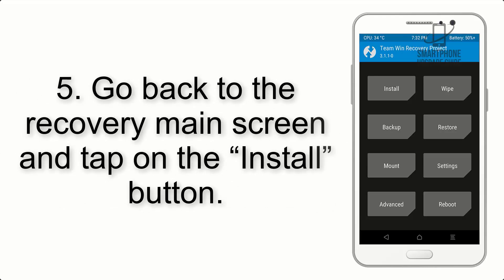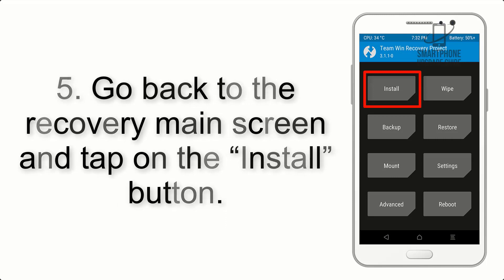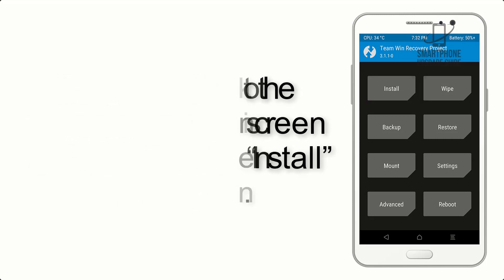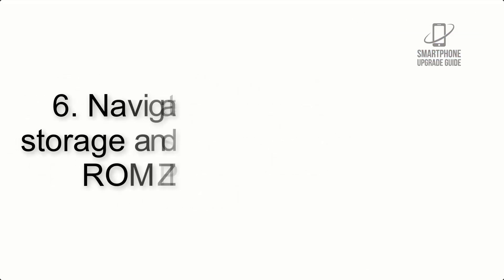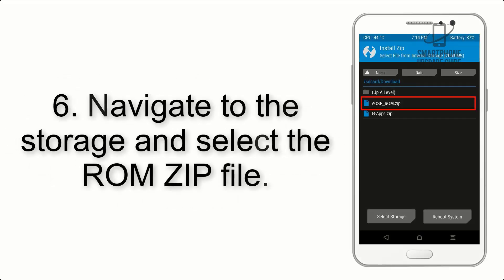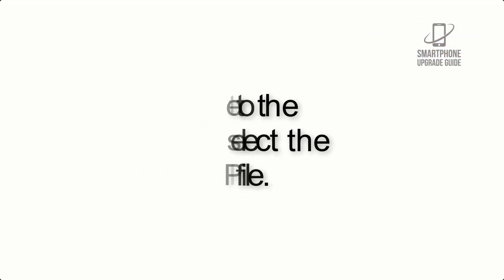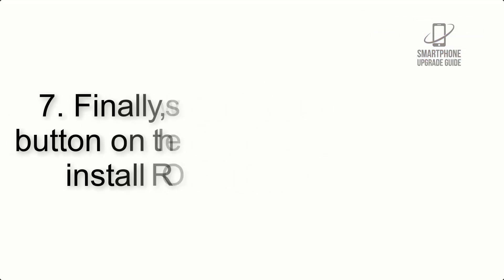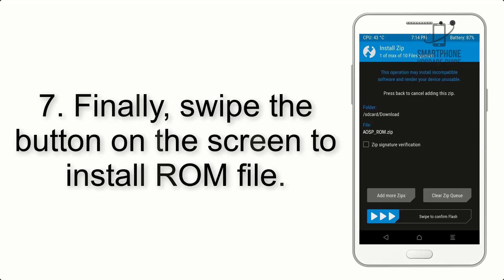Step 4: Swipe the button to wipe the device. Step 5: Go back to the recovery main screen and tap on the Install button. Step 6: Navigate to the storage and select the ROM zip file.